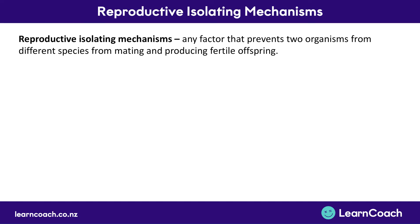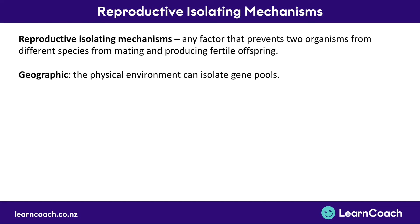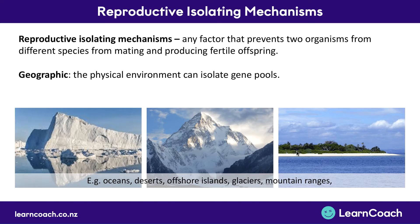There are five different isolating mechanisms we're going to talk about today. The first is geographic. If you're in a physically different environment you can isolate gene pools. For example, oceans, deserts, islands, or mountain ranges would separate one group from another. Because they'll then have different environmental pressures, they'll evolve differently and can turn into different species. This is geographic separation and allopatric speciation.